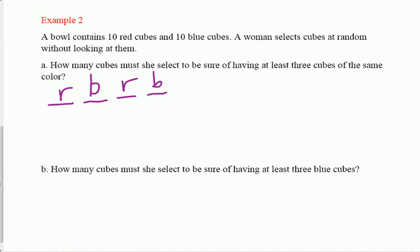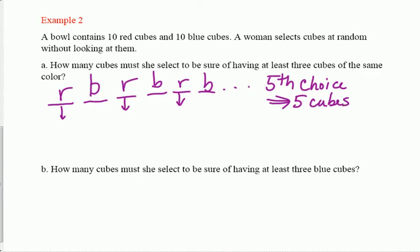She starts and picks out a red one. If she had good luck she could pick another red one and another red one, but she has the worst luck in the world. The worst-case scenario, the longest we can stretch this out, is red, blue, red, blue, red, blue. What's the first time that she has gotten three? If this is the worst case scenario, it was the fifth slot, the fifth choice.